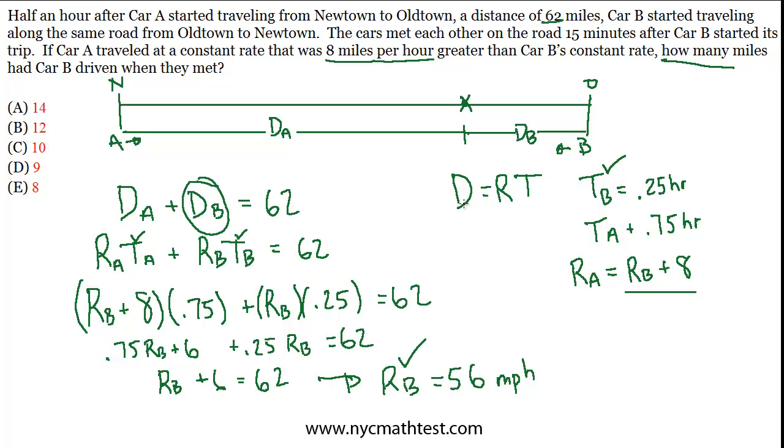But now that we know RB, we also know TB. So we can just say distance of B equals the rate of B, which we now know is 56 miles per hour, times the time of B, which is a quarter of an hour, 15 minutes. And a quarter of 56 is 14. So that's the answer, that's choice A. As a sense check, does it make sense that B only covered 14 miles, which means car A had to cover the entire rest of the distance, which is 48 miles? It does make sense because we know car A left 30 minutes sooner and traveled faster, so we expect it to cover much more of the distance than car B. So A is the best choice.